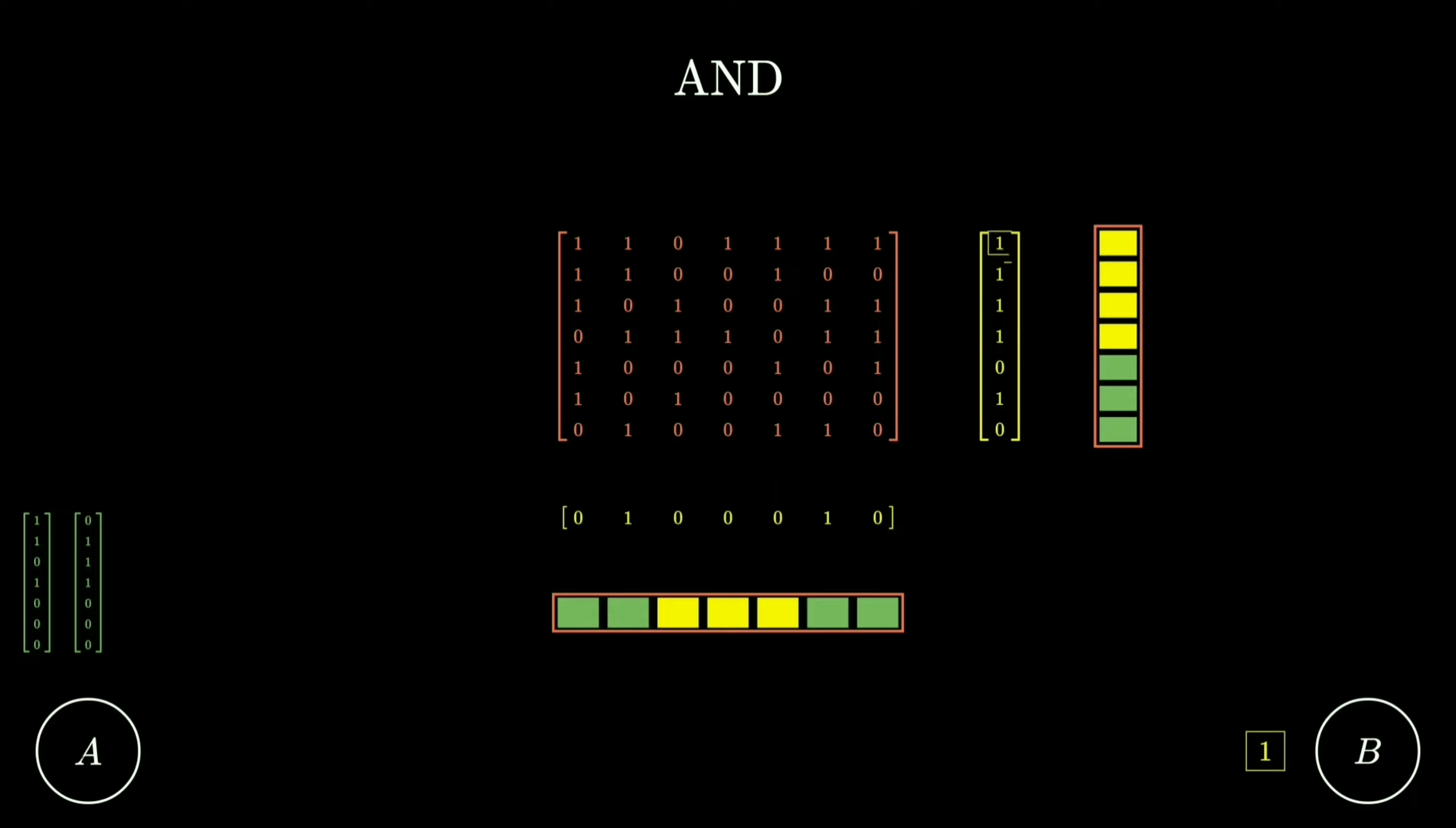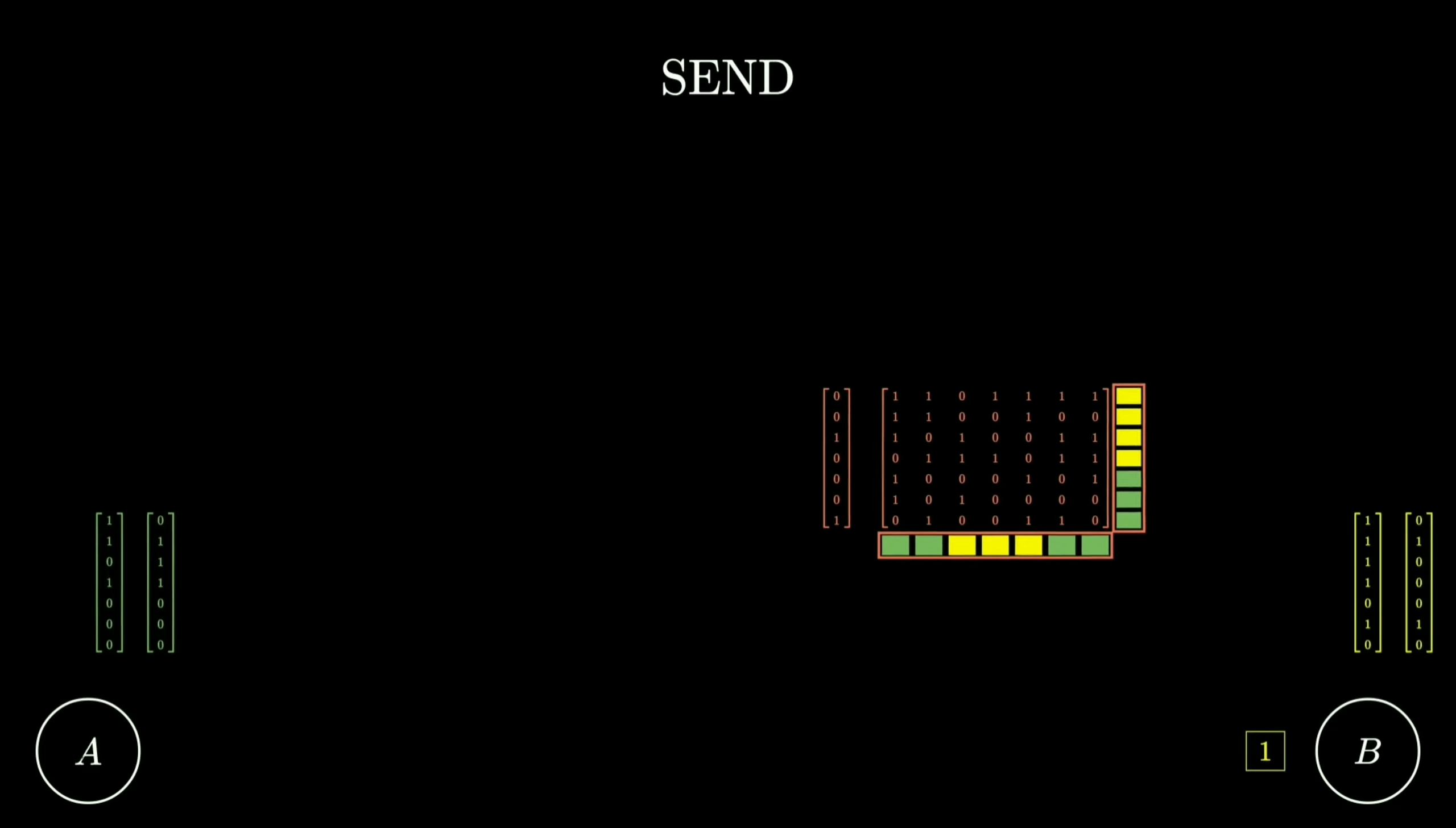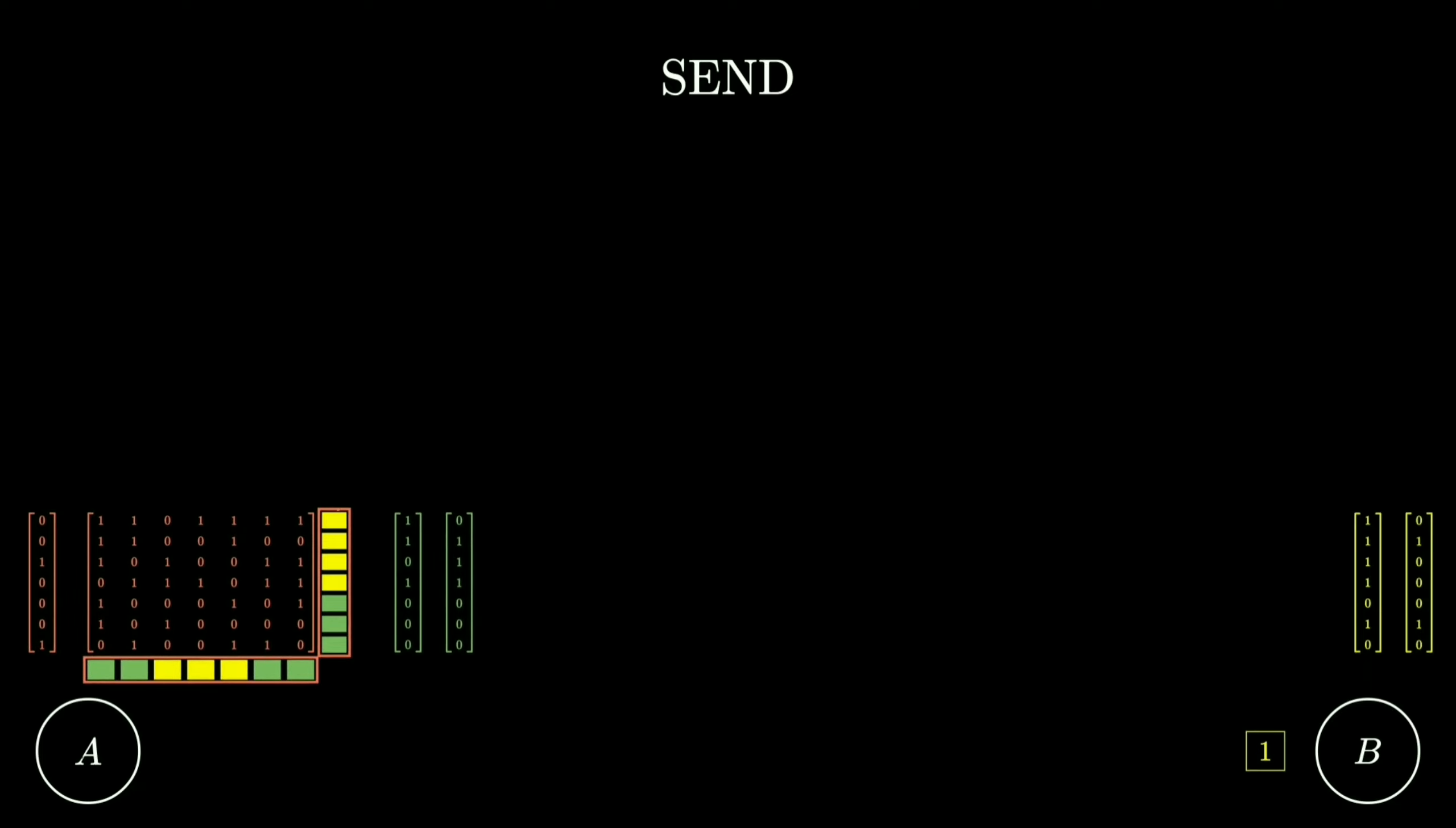At the same time, the matrix is multiplied with the same first secret vector of B and merged into a single vector by using XOR. This primary result vector is XORed with B's second secret vector into a secondary result vector. This secondary result vector is sent back to A.